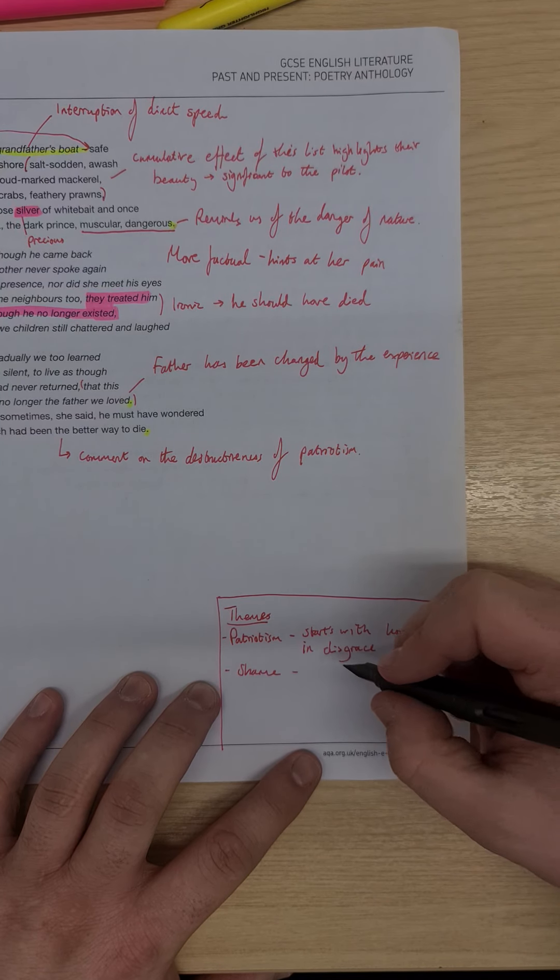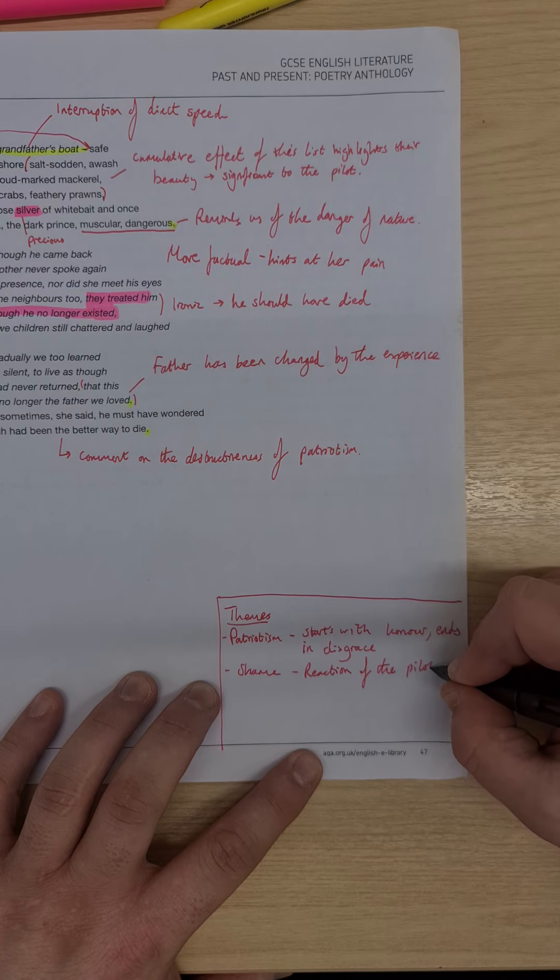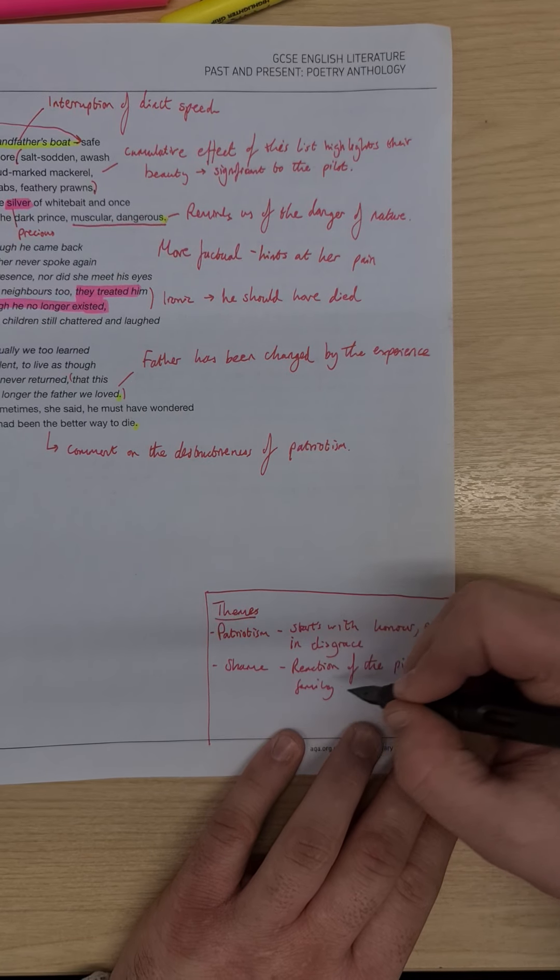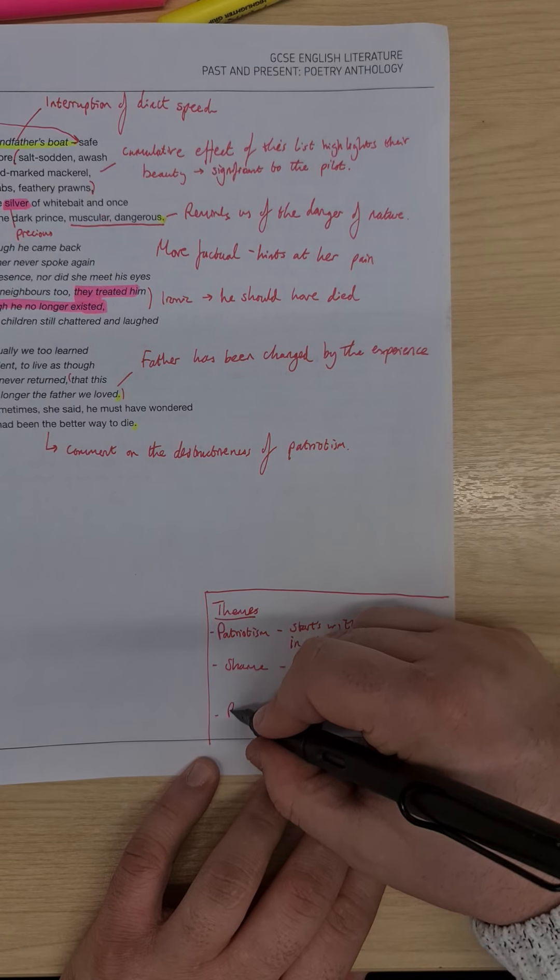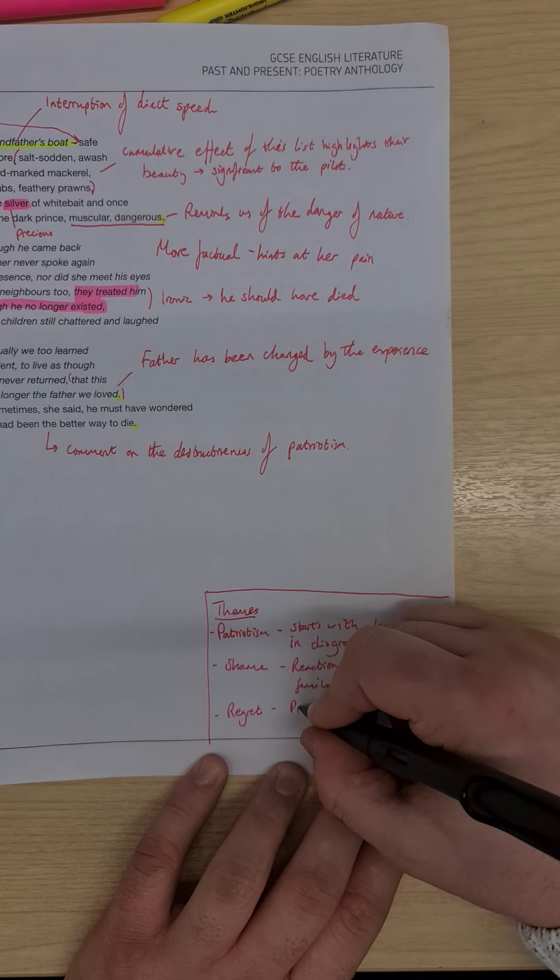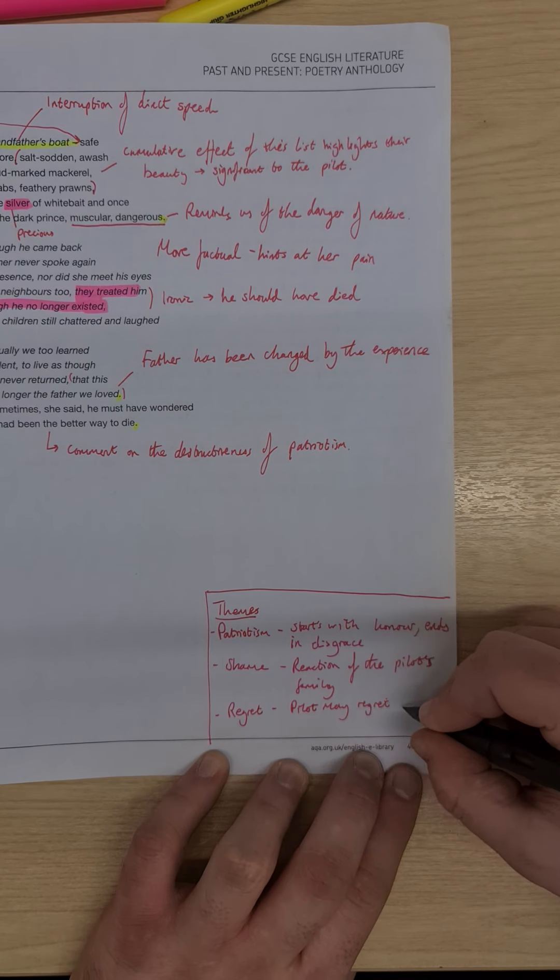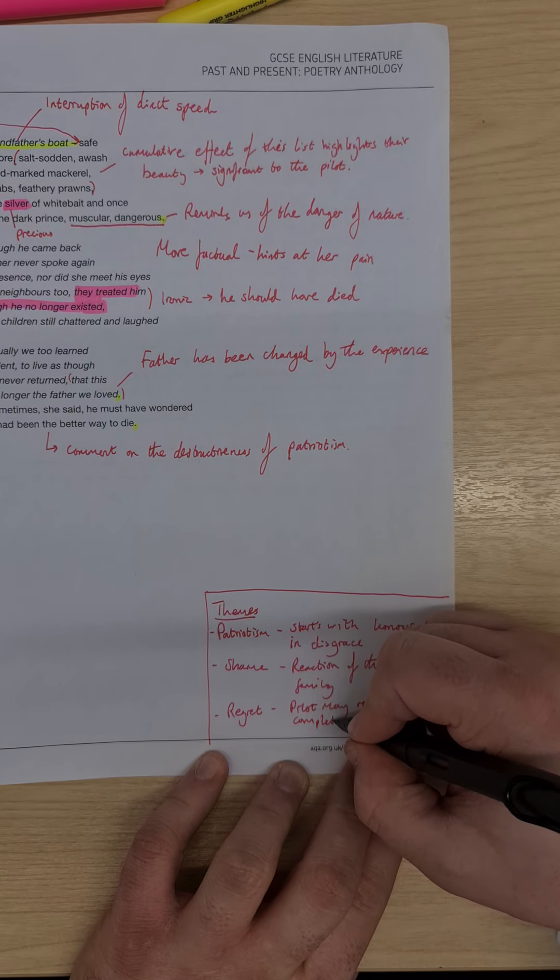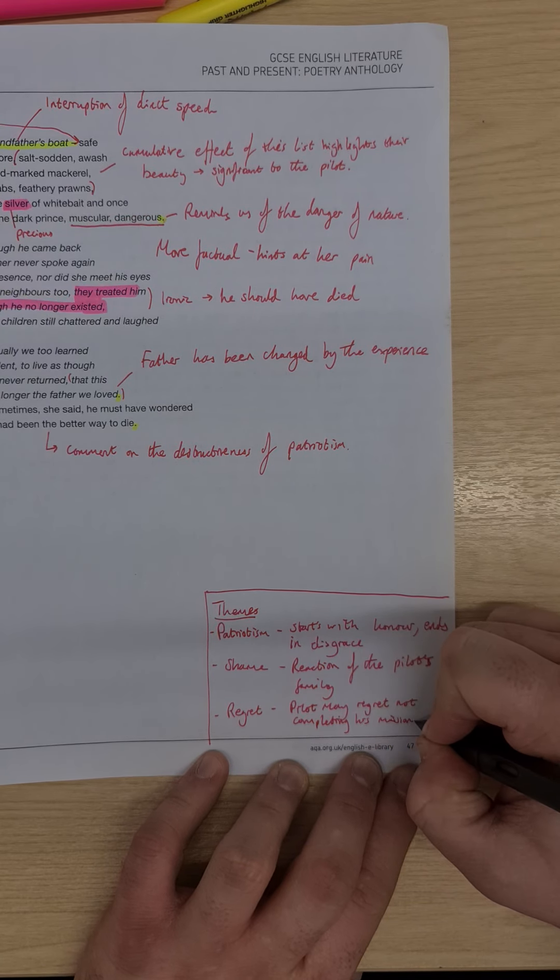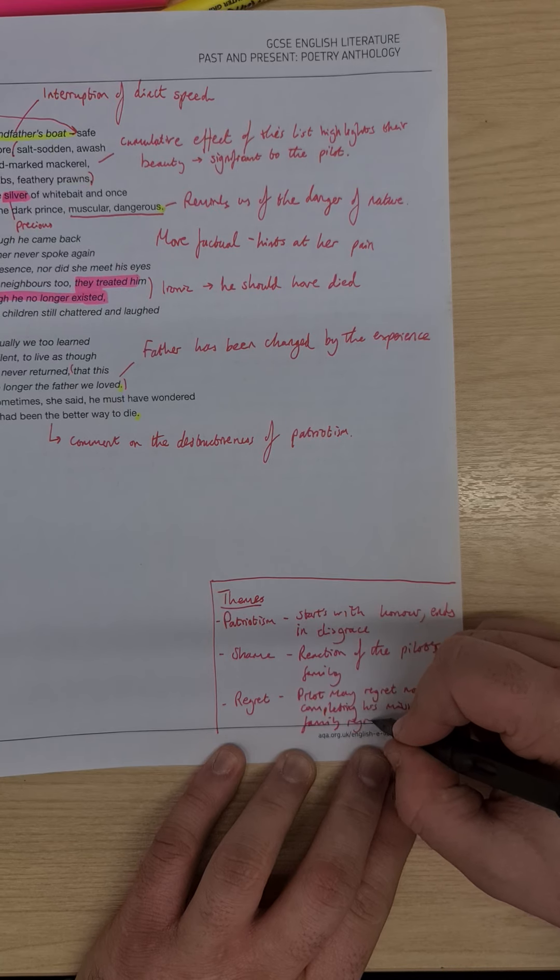We have the idea of shame, and the shame here is the reaction of the pilot's family. And then the last one would be regret. Perhaps it's the pilot's regret not completing his mission, or his family regret his return.